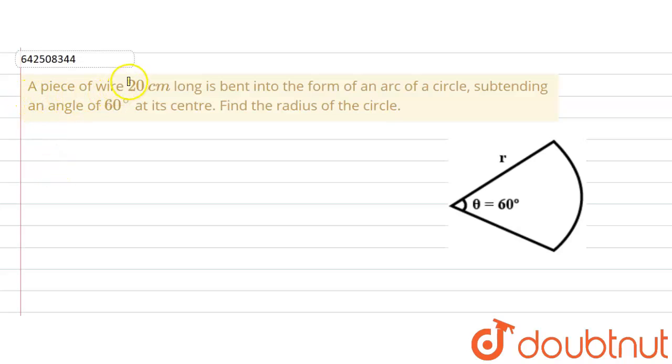The given question says that a piece of wire 20 cm long is bent into the form of an arc of a circle.